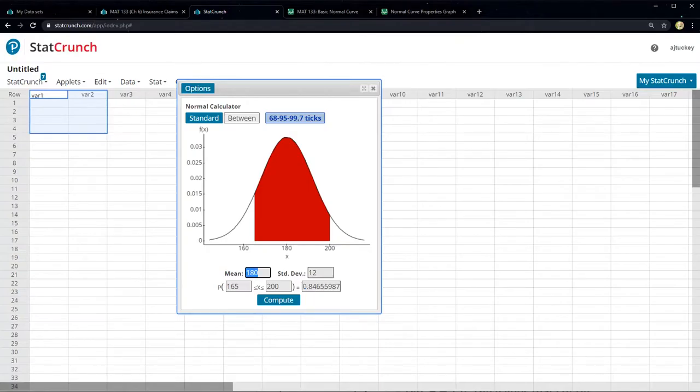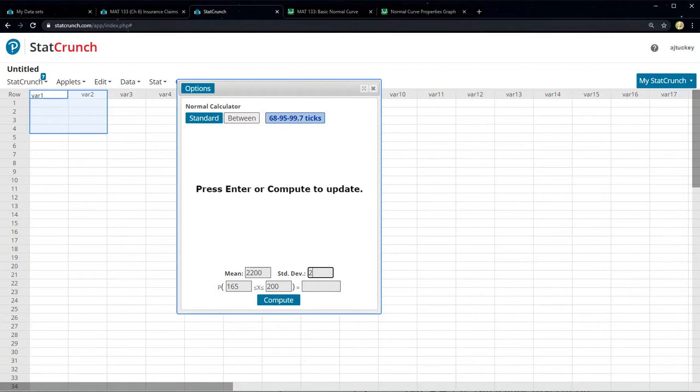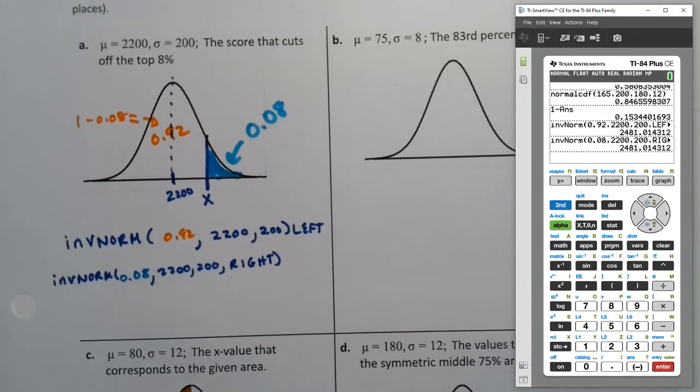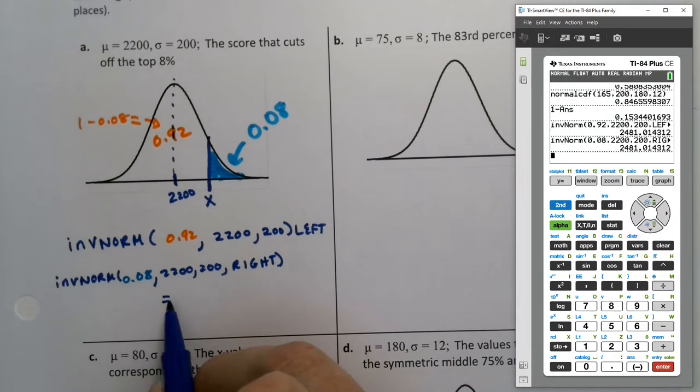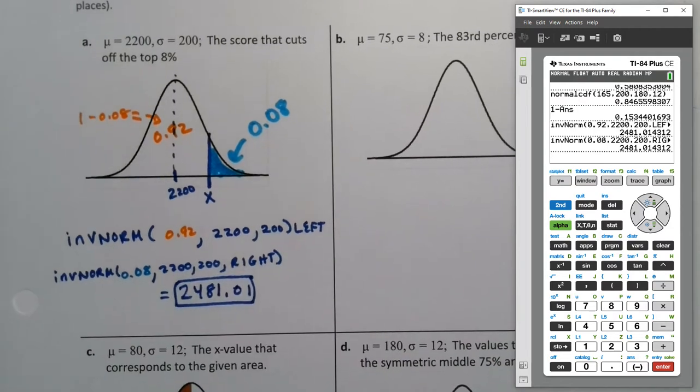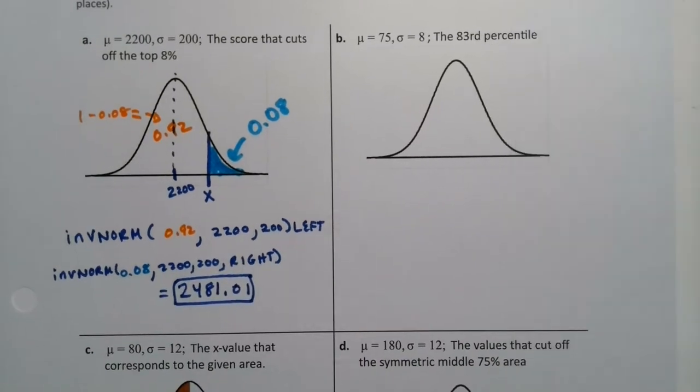In StatCrunch, I would just type 2200 here, 200 here. I have to choose a standard. It's not a between one, right? So 2200 and 200. And I want to choose greater than and say, I don't know what the X value is, but I know I want it to be 0.08, enter. It should look like it looks on the page. That's why it's so, one of the many reasons it's so important for you to draw and shade that picture appropriately. So 2,481.